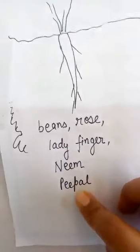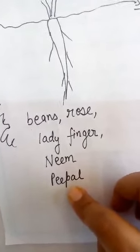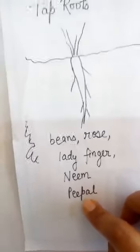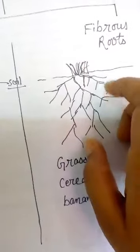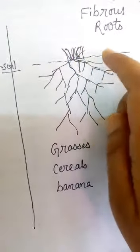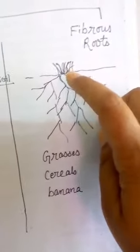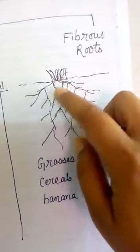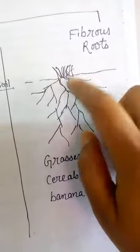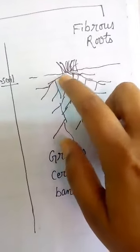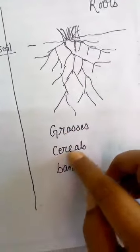Besides the examples given in the book, if you go into nature and observe yourself, you will find many more taproots. I suggest that once you are free from COVID-19, go outside and search for these types of roots, then show them to your teachers. Fibrous root is the other type — many thin roots arise from the base of the stem in a branched way. Examples include grasses, cereals like wheat and rice, and banana.